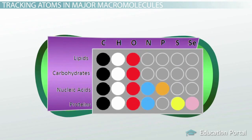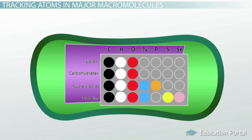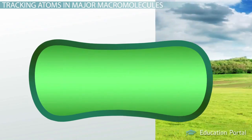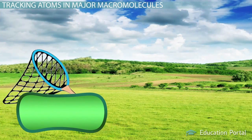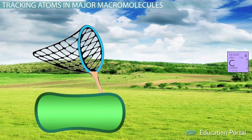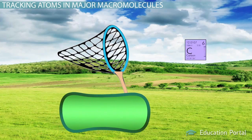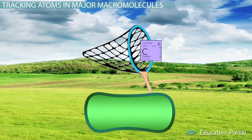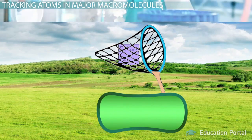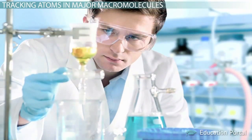For bacteria to grow and reproduce, they must have a source of all these elements. In nature, bacteria have to scavenge compounds containing these elements from the environment.